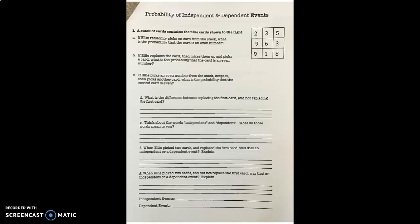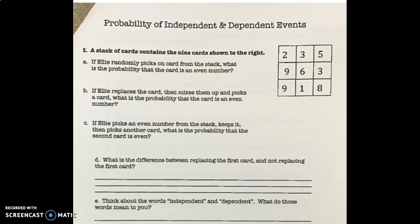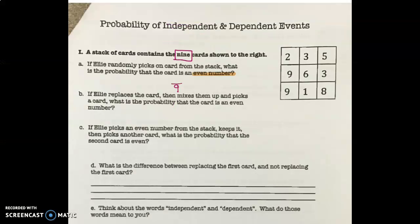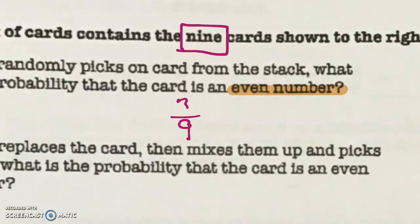Let's start on letter A and work our way down. It says a stack of cards contains the nine cards shown to the right. If Ellie randomly picks one card from the stack, what is the probability that the card is an even number? We already know there are nine cards, so the whole is nine. Even numbers are two, six, and eight — that's three even numbers. Three out of nine, simplify by dividing by three, so that is one-third.